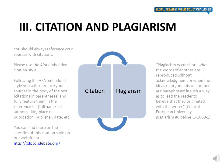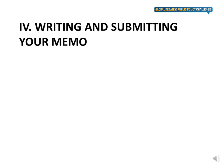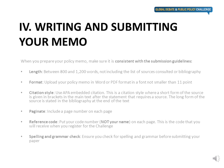Now let's move to the last part: writing and submitting your memo. When you prepare your policy memo, make sure it is consistent with the submission guidelines. Make sure that it is between 800 to 1,200 words long, not including the list of sources consulted or the bibliography. When you upload your policy memo, it should be in Word or PDF format and in a font no smaller than 11 point. Use APA embedded citation and include a page number on each of the pages. Put your code number and not your name on each of the pages — this is the code that you receive when you register for the challenge. Make sure to check for spelling and grammar before sending in your policy memo.